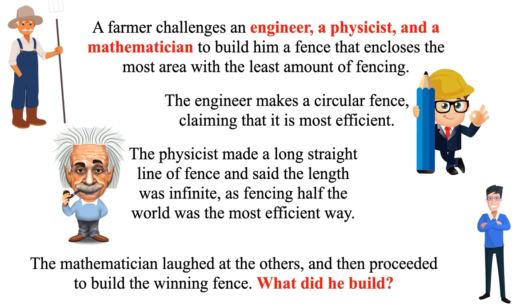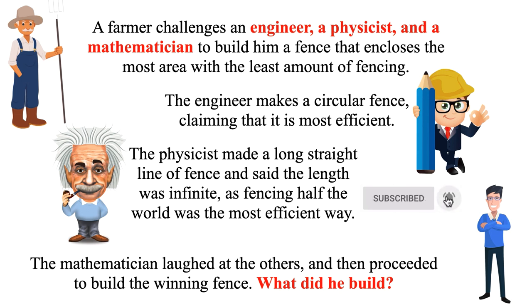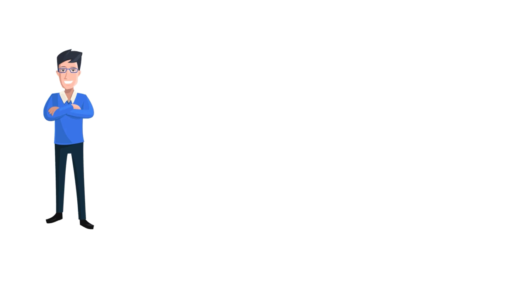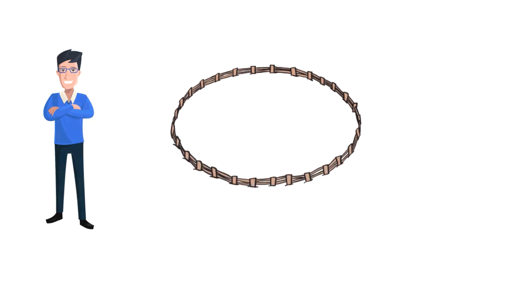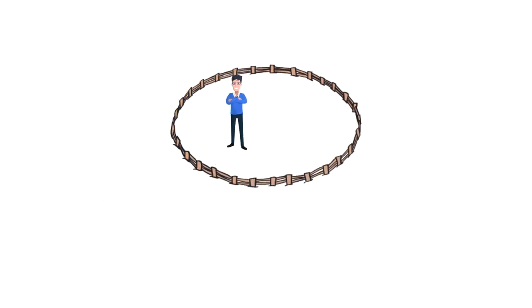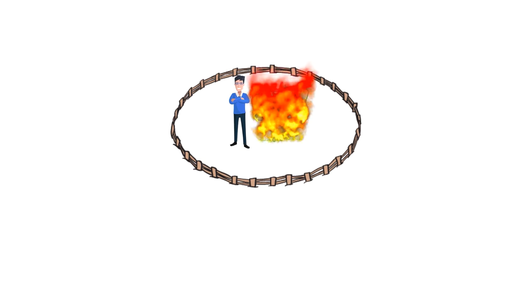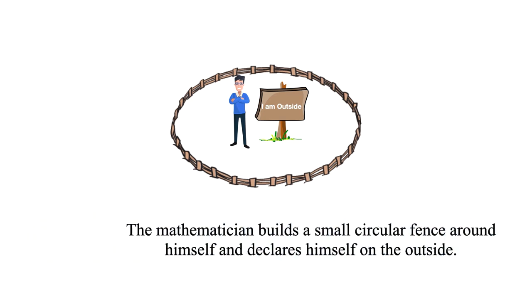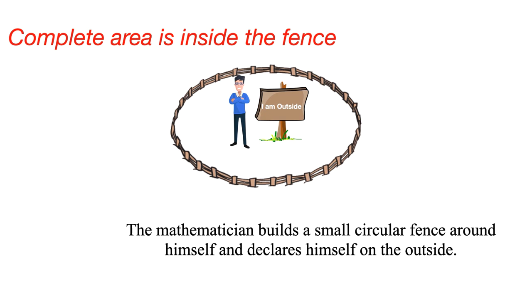The solution is that the mathematician builds a small circular fence around himself and declares himself to be on the outside. Just after building a small circular fence around himself, he declares himself on the outside. In this way, the mathematician fences in the whole world by using minimal fencing — he is the only one outside the fence.